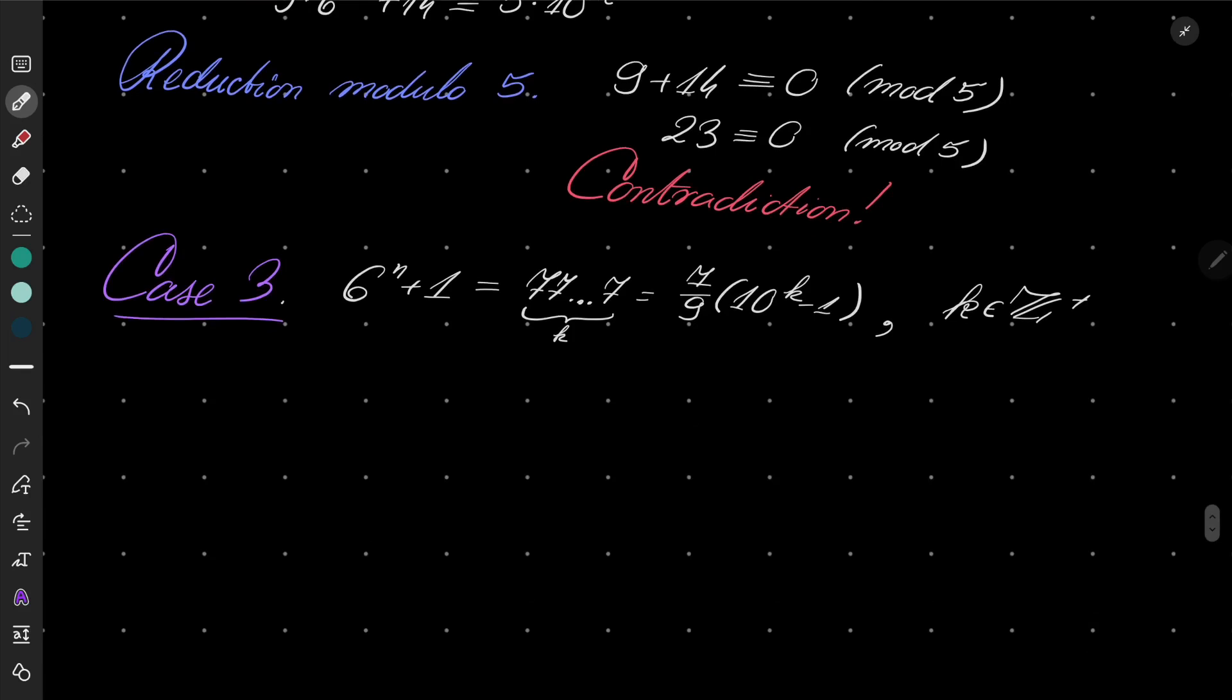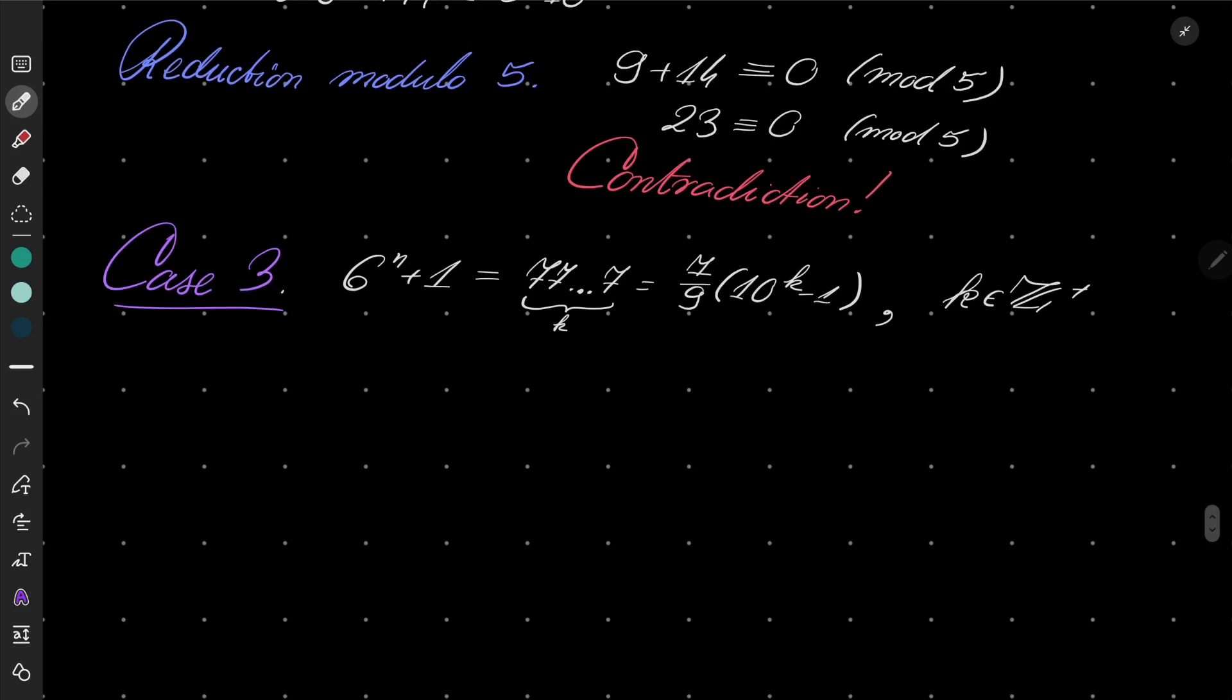So let's write 7 over 9 times 10 to the power of k minus 1, where k is some positive integer. So in other words, we can write it in the following way: